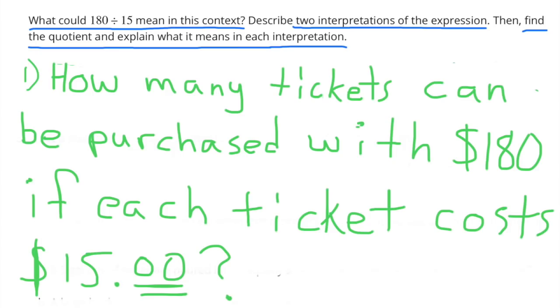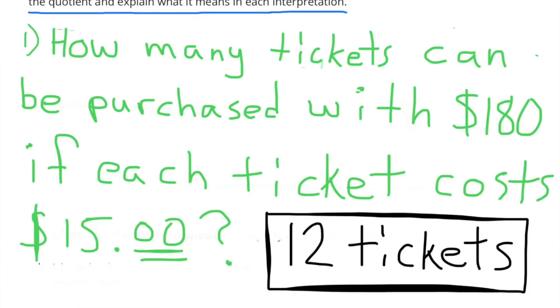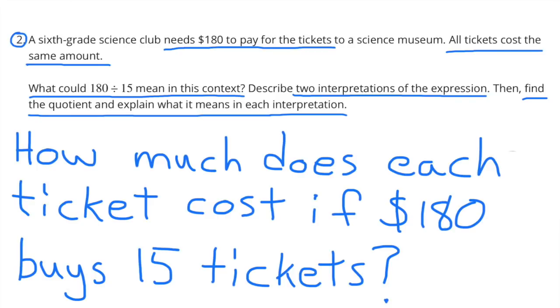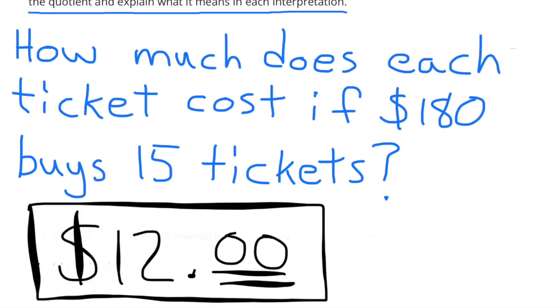One interpretation of the expression could be how many tickets can be purchased with $180 if each ticket costs $15. A second interpretation could be how much does each ticket cost if $180 buys 15 tickets. The quotient or answer to that expression is $12. You could buy 15 tickets at $12 per ticket with $180.